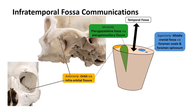Now moving on to the communications. This fossa communicates with several regions. Above, it communicates with the temporal fossa through a gap deep to the zygomatic arch. The zygomatic arch is visible here, with the temporal fossa superior to it, and through this gap it communicates with the infratemporal fossa below.